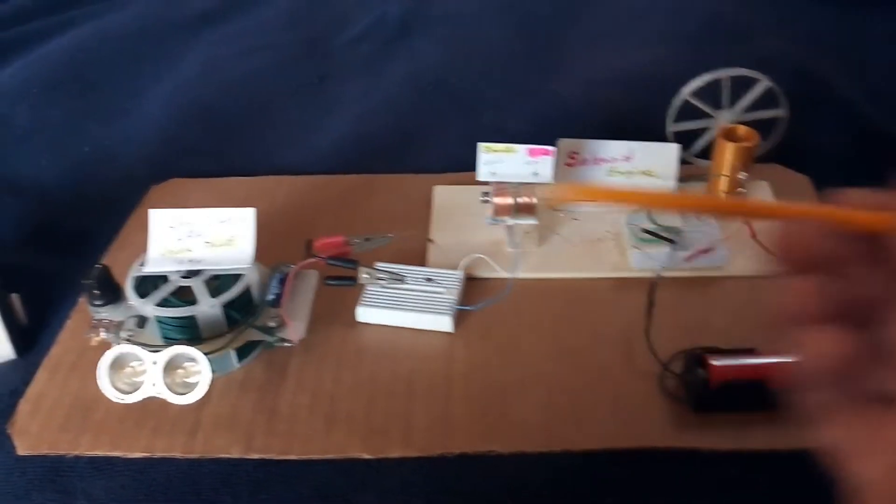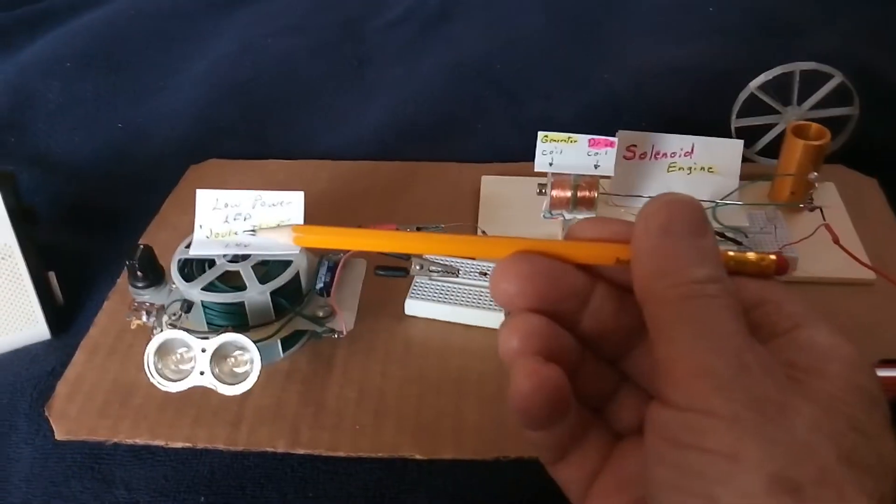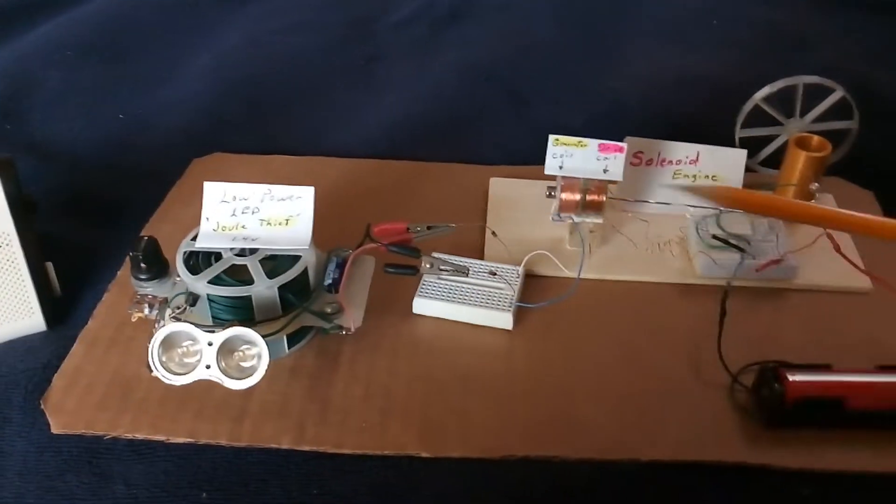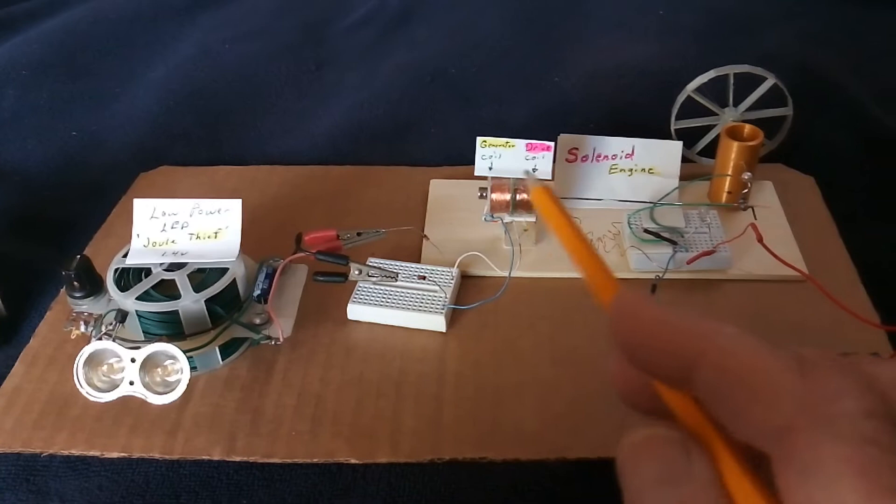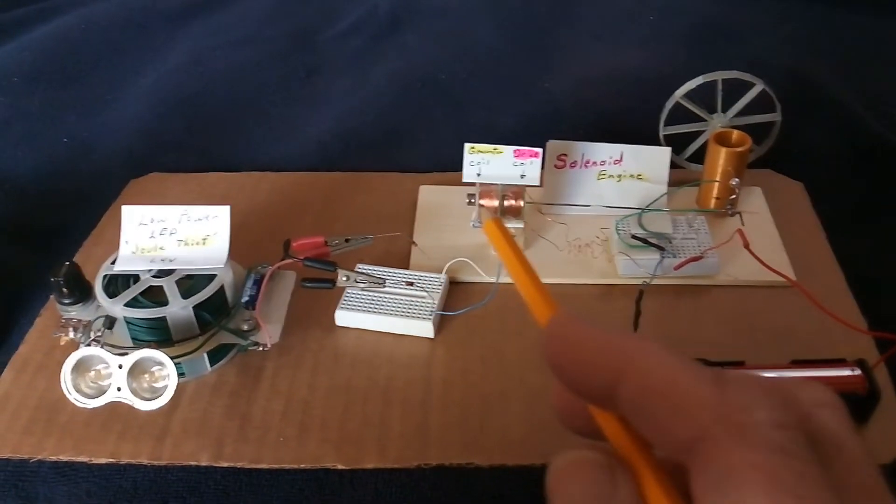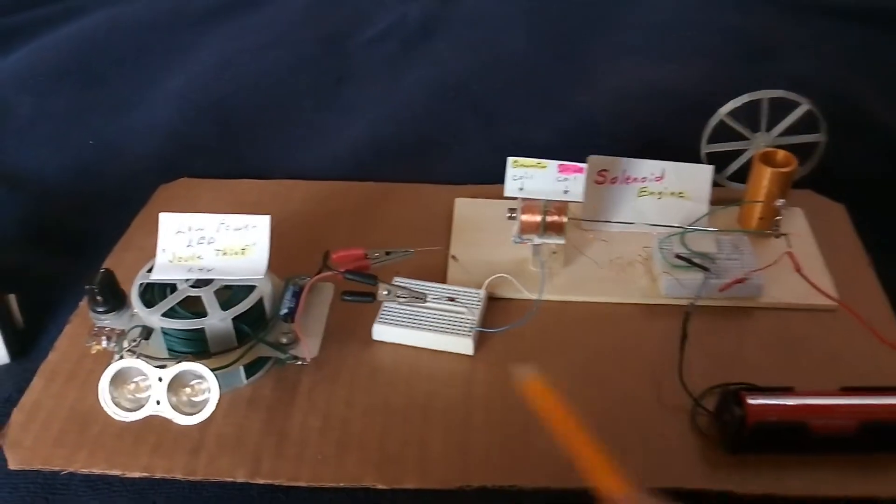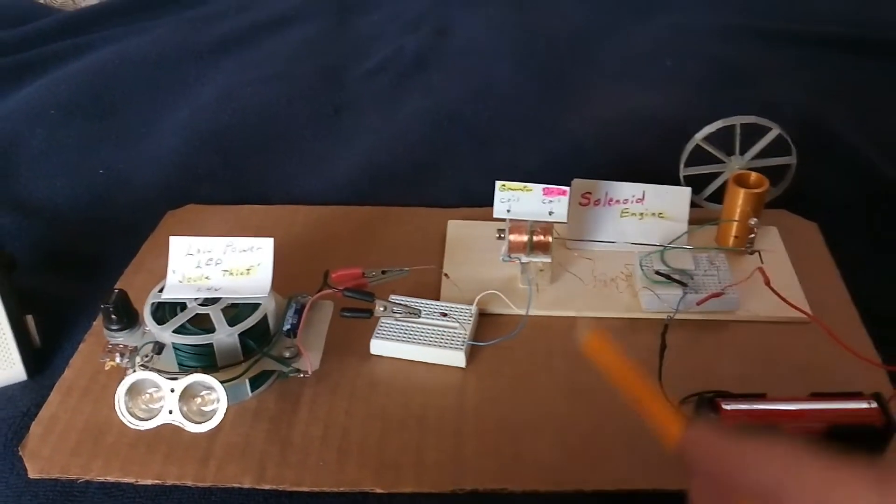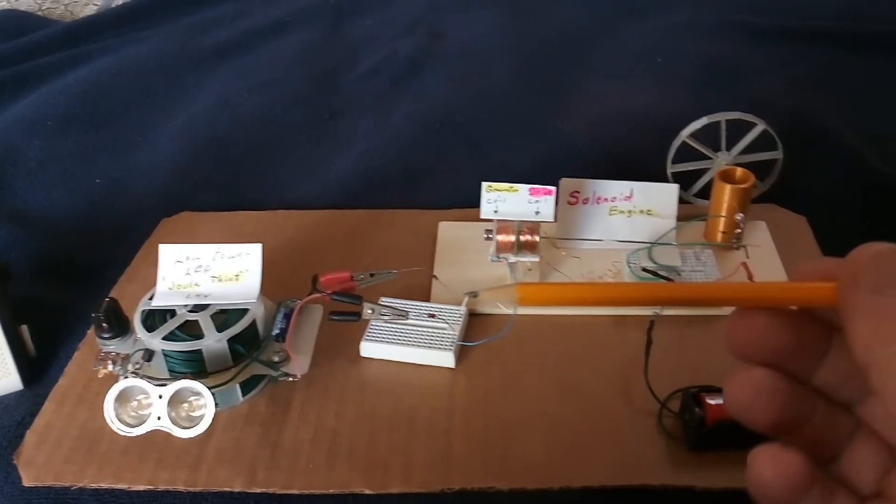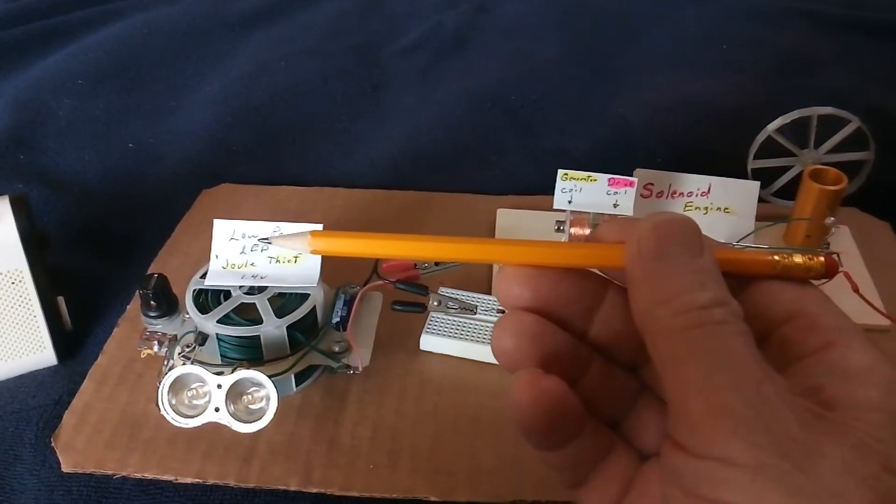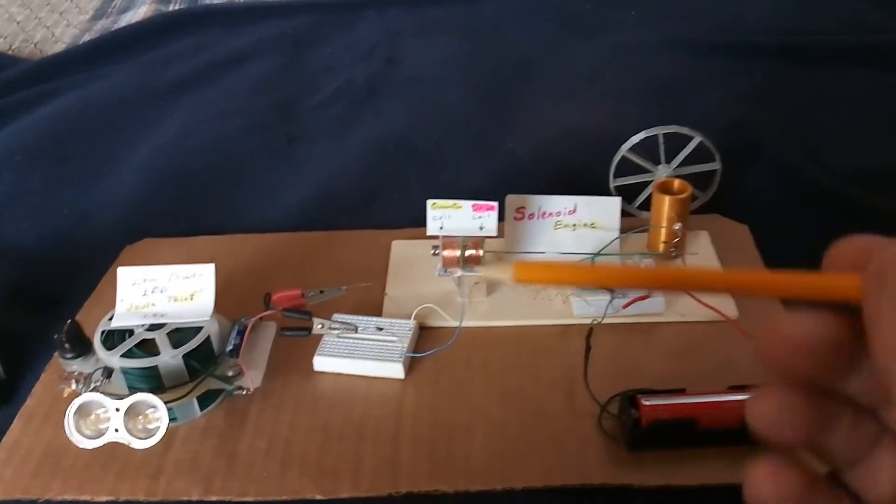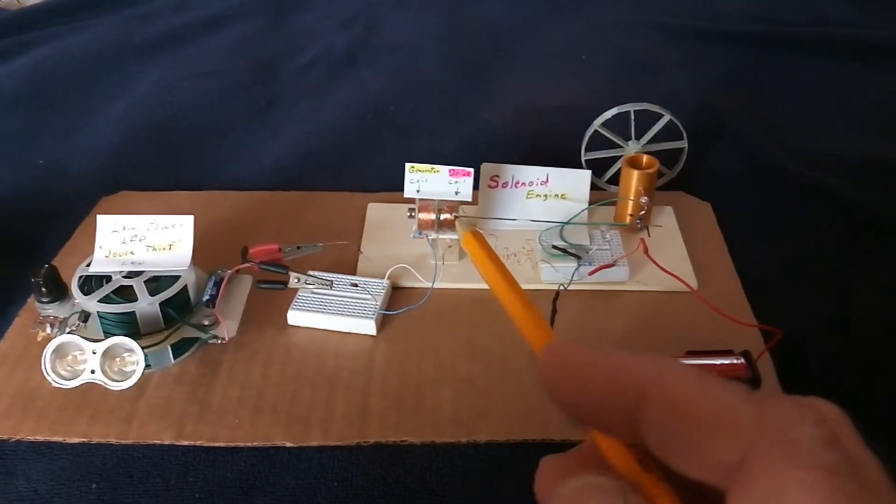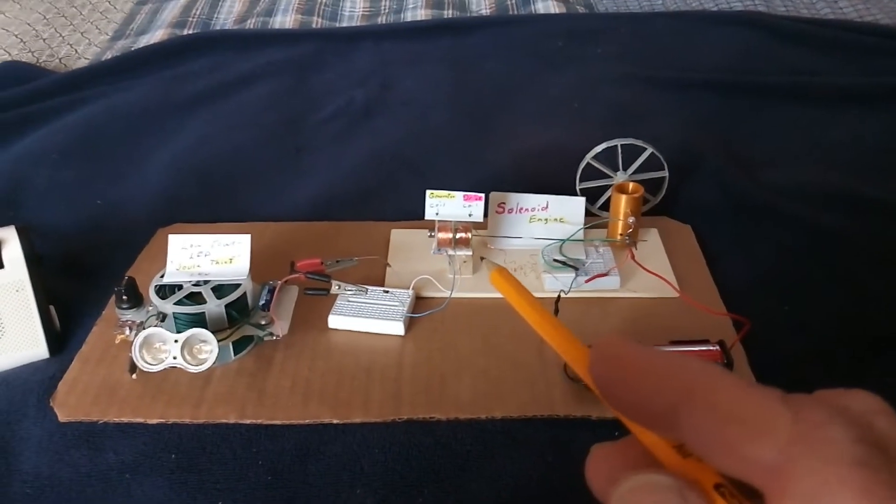When you move this thing back and forth, you've got to stop it, move it back, stop it, move it back, back and forth. You're losing a lot in this process rather than trying to rotate something, which doesn't take much energy to keep moving around. When you're taking inertia and stopping it, then starting it up again, you lose a lot of energy.